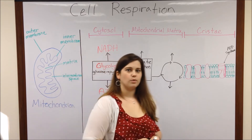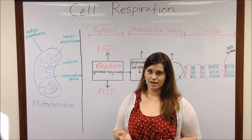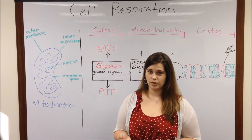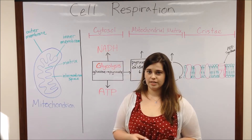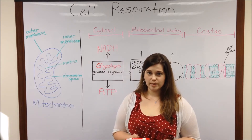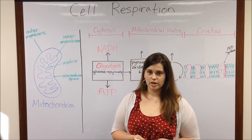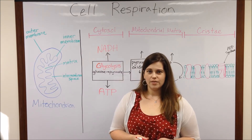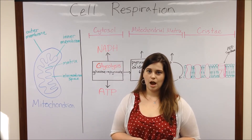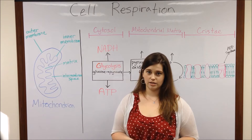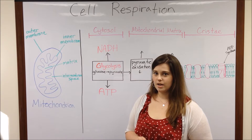Now at this point, if the cell is in an oxygen-poor environment — there's not enough oxygen for it to continue with normal aerobic respiration — it will proceed into different types of fermentation pathways, also known as anaerobic respiration, meaning respiration without oxygen. This is not the most efficient and you don't get much ATP from it. However, if the cell does have oxygen, it can proceed with aerobic respiration, which is the rest of what we're going to be talking about today.